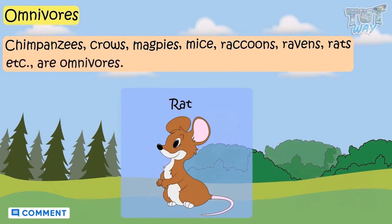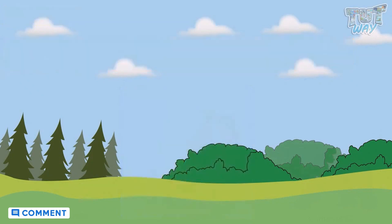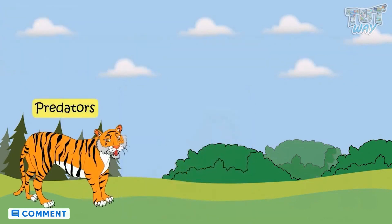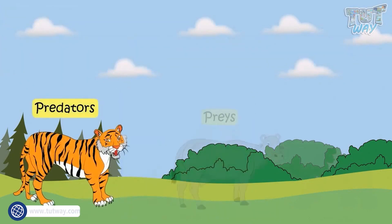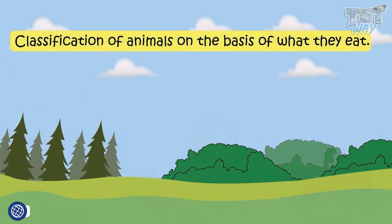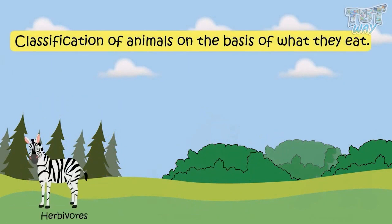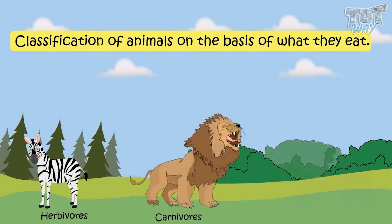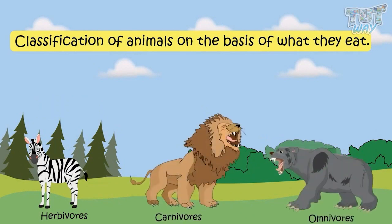So kids, today we learned what predators are, what preys are, and we classified animals on the basis of what they eat — that is, herbivores, carnivores, and omnivores.